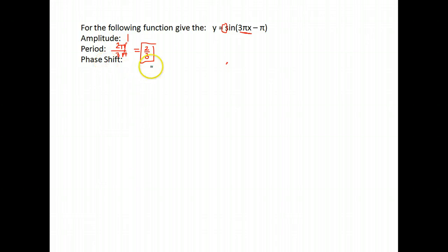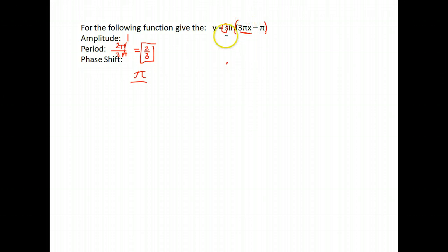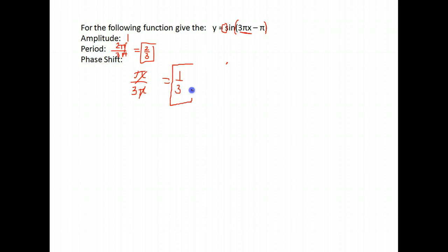And finally, the phase shift. We take that number added or subtracted with our x value — notice it is in parentheses. It was listed as negative π, so we write just π with the opposite sign, then divide by whatever was in front of our x, which was 3π. The π's cancel, and we get 1/3 as our phase shift.